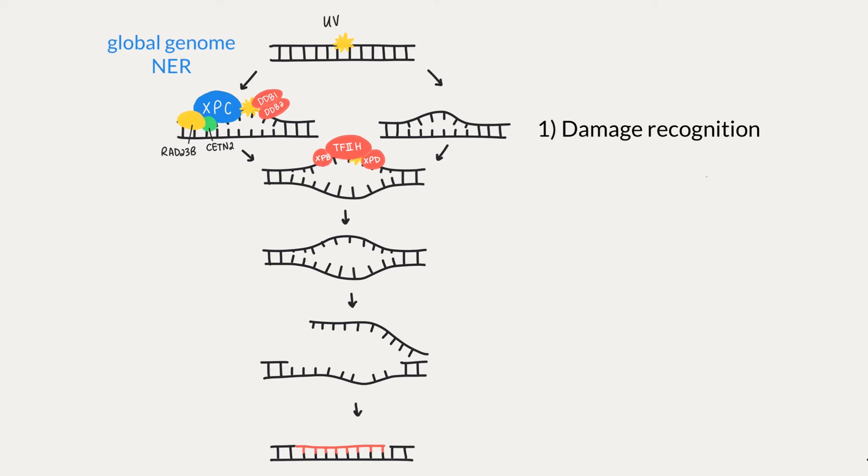In global genome repair, the entire genome is examined for distortion in the helix. A protein called XPC is the main damage sensor and it's stabilized by Rad23B and Centrin2. This complex recognizes helix distortion and bending anywhere in the genome.